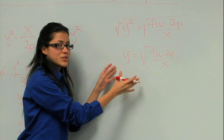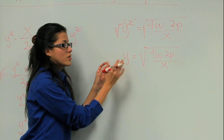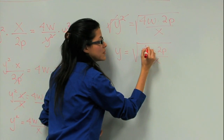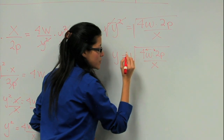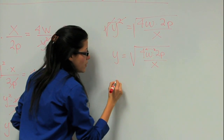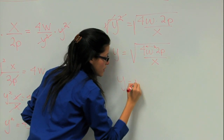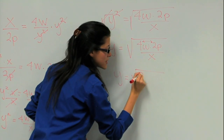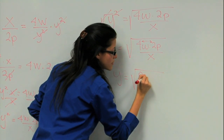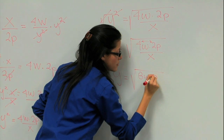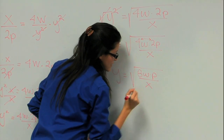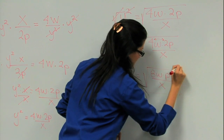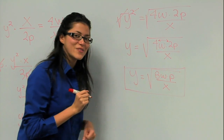But this is not the final answer yet. What do we do now? We simplify it. We multiply these two numbers, and now we get y equals the square root of 4 times 2p over x. This is the final answer. Thank you for watching.